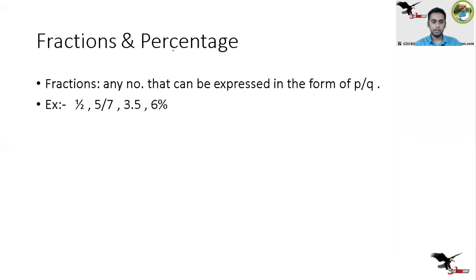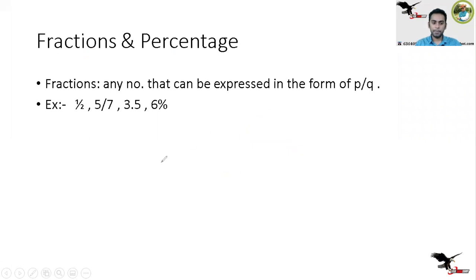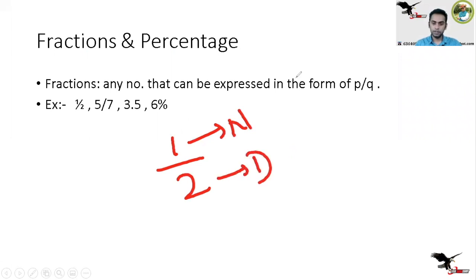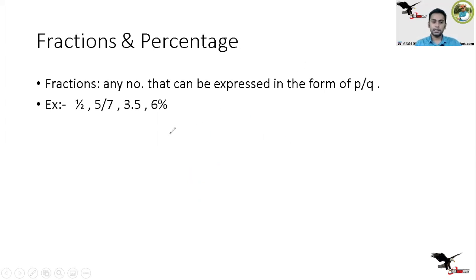Now we'll get started with percentage. First, we have to deal with fractions. Any number that can be expressed in the form of p by q is called a fraction. p by q means it has a numerator and a denominator. For example, in 1/2, 1 is the numerator and 2 is the denominator. Similarly, in 5/7, 5 is the numerator and 7 is the denominator.